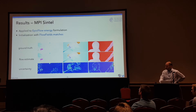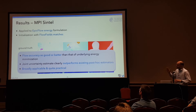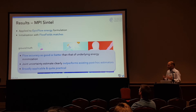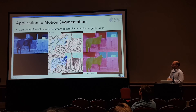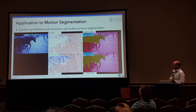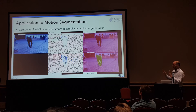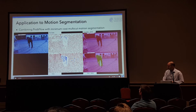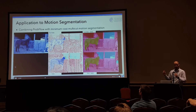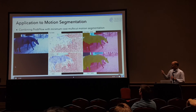The takeaway message is that by applying probabilistic inference to standard energy minimization formulations, we can get flow that's as good or even slightly better than the underlying standard technique, but we get uncertainties almost for free. Here's an application to motion segmentation: on the top, motion segmentation based purely on standard off-the-shelf optical flow; on the bottom, the same optical flow energy but with uncertainties attached. By exploiting this uncertainty as an additional cue for the motion segmentation pipeline, it becomes a fair bit more reliable.